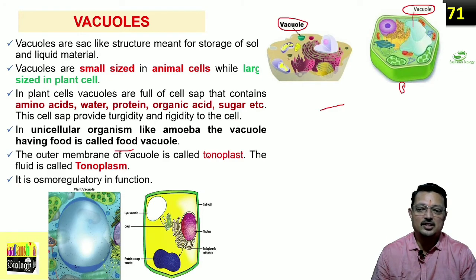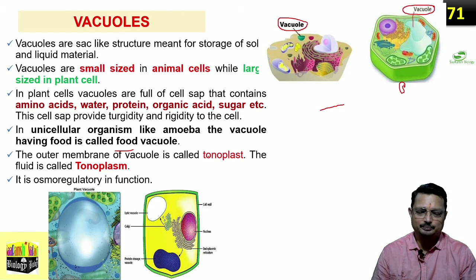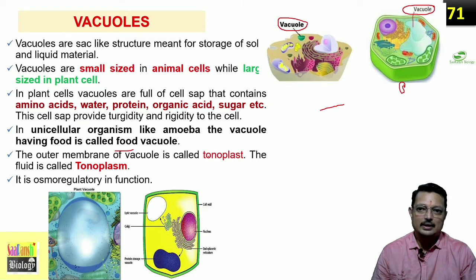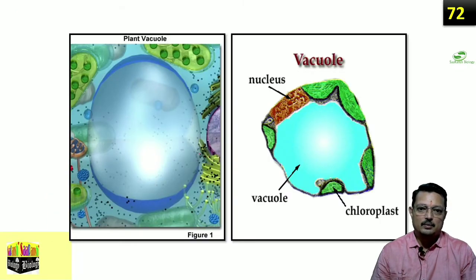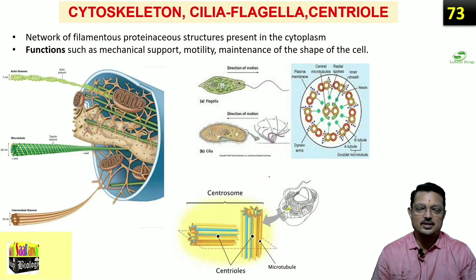The major function performed by vacuoles is osmoregulatory. Read the details in your NCERT textbook as well. As you can see in a plant cell, up to 90% of the space can be occupied by the vacuole — that is a key point of differentiation between plant and animal cells.